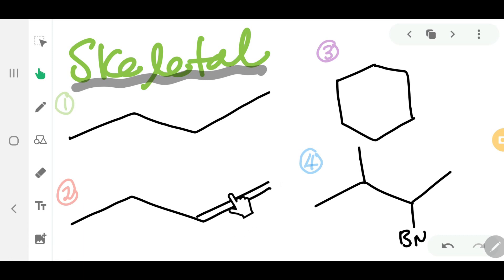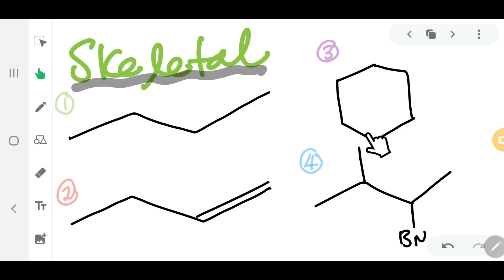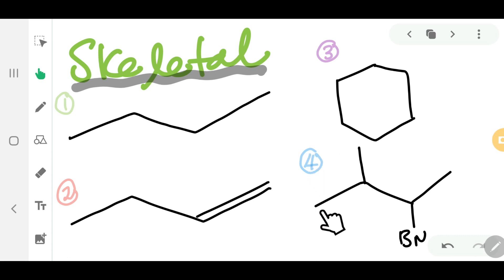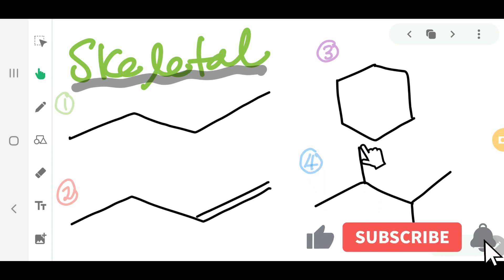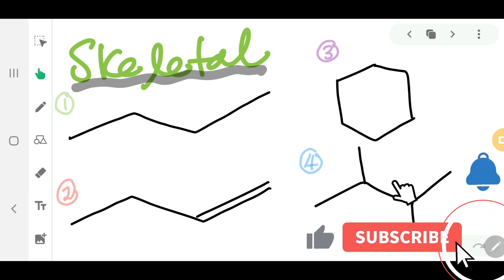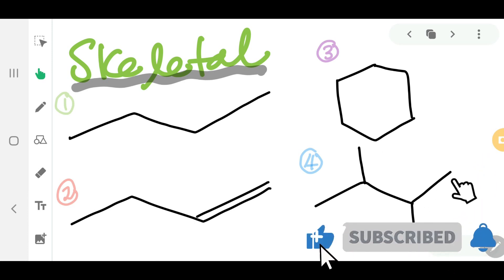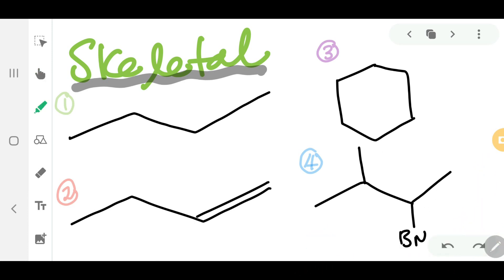For structure number three, you have six carbons. For structure number four, you have five carbons. I'm going to write that down so it will be easier for you to understand and remember what skeletal structure means.